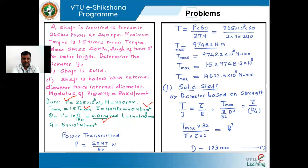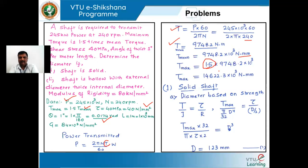The power transmitted equation is 2πNT/60 watts. Rearranging for torque: T = P × 60 / (2πN). Substituting power as 245 × 10³ watts and speed as 240 rpm, we get the mean torque as 974.82 N·m. Converting to newton-millimeters for consistency with stress units, the mean torque is 974.82 × 10³ N·mm. The maximum torque is 1.5 times the mean torque, giving us the maximum torque for shaft design.